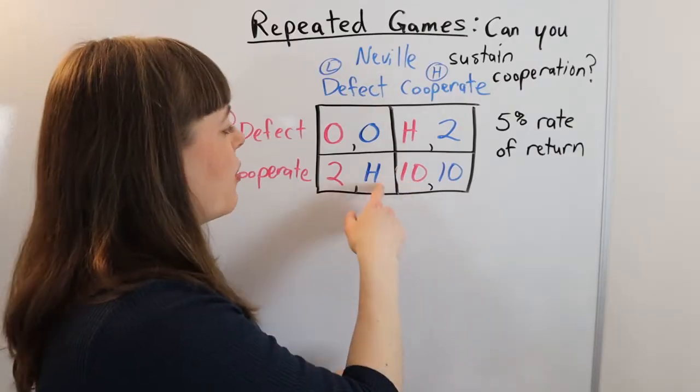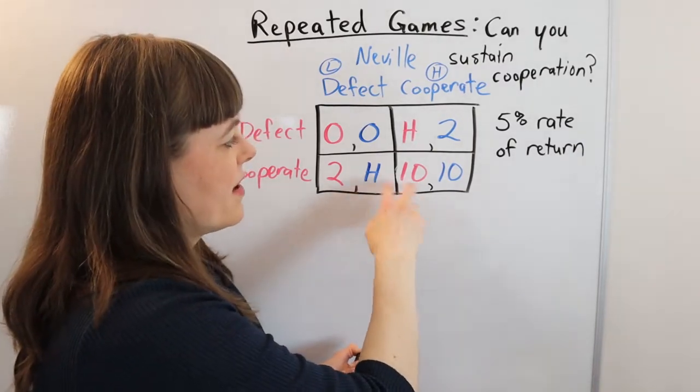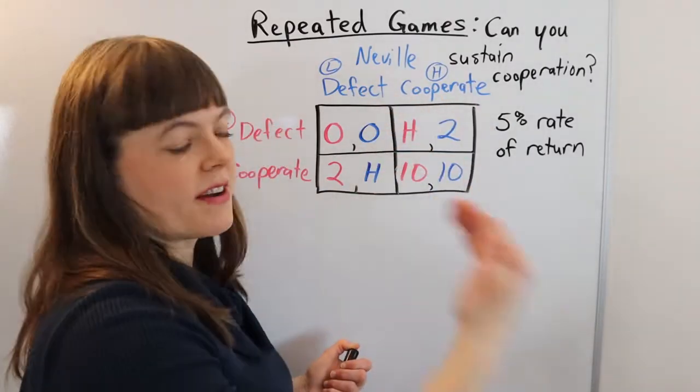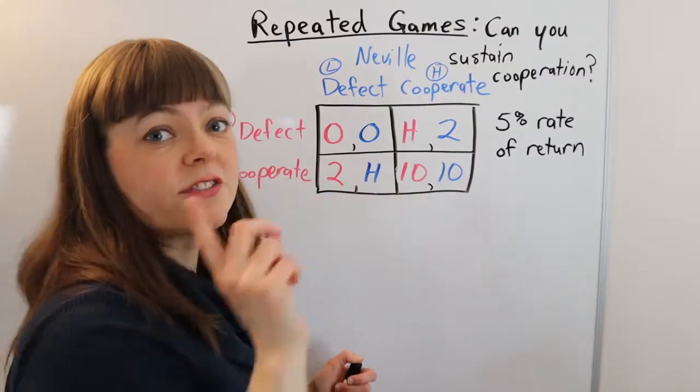But of course, if H is really low, if you would only get $12 from defecting, then you're probably going to want to stick with the cooperative equilibrium where you get 10 every time rather than defecting on your partner and getting 12 just once.